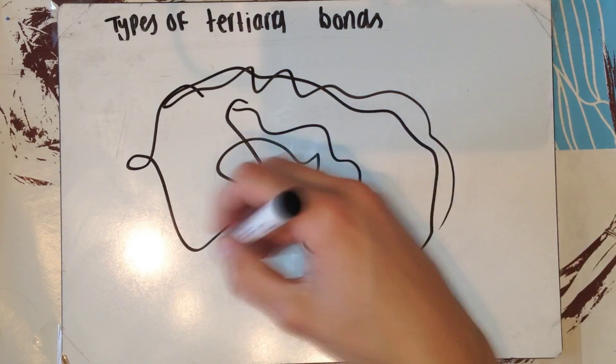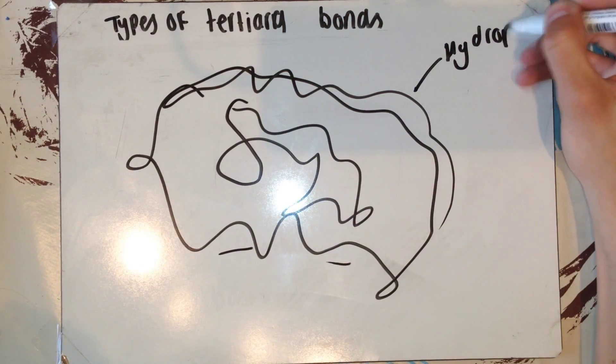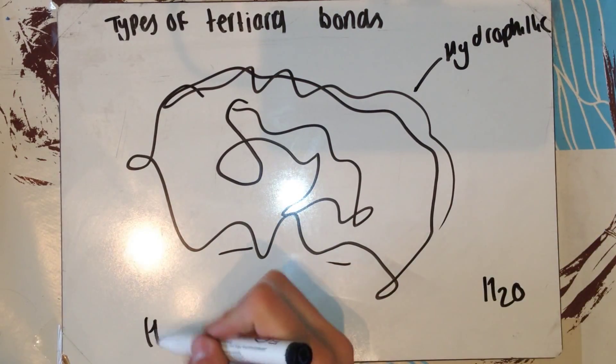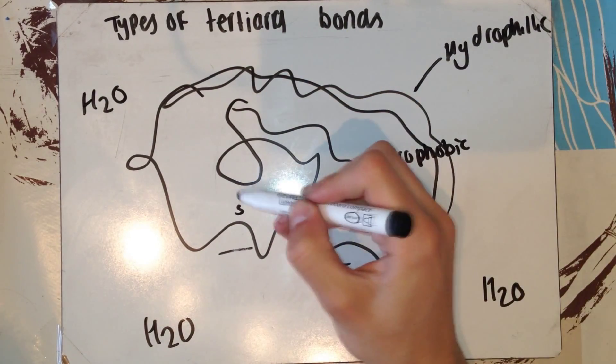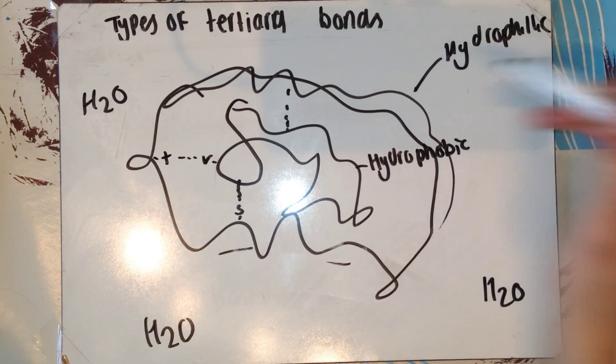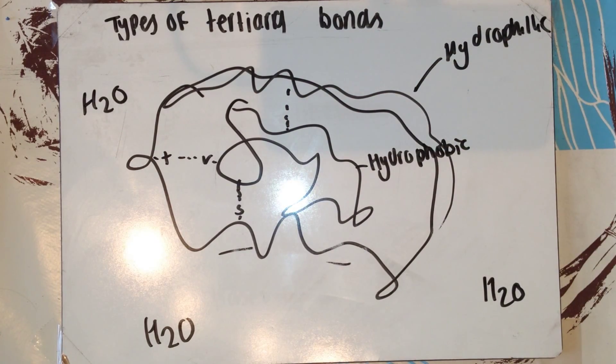So here is the tertiary structure of a random protein. The hydrophobic amino acids have repelled the water and gone to the middle. As you can see, all these different bonds can form. You can have disulfide bridges, ionic bonds, and of course hydrogen bonds.